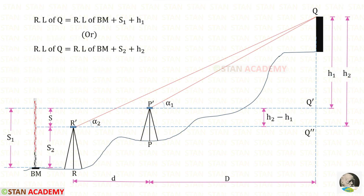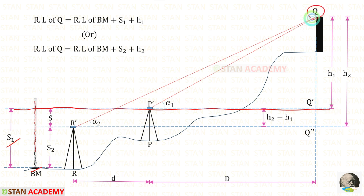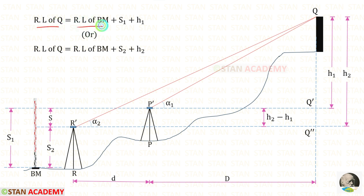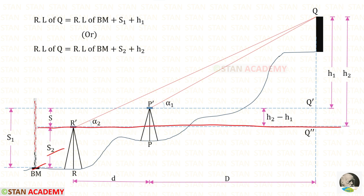Now let us see how to find the reduced level of the top of the tower, point Q. There are two methods. In the first method, add the reduced level of the benchmark plus staff reading S1, reaching the instrument axis line at A, then add H1. So: RL of Q equals RL of benchmark plus S1 plus H1. In the second method, add RL of benchmark plus staff reading S2, then add H2. So: RL of Q equals RL of benchmark plus S2 plus H2.